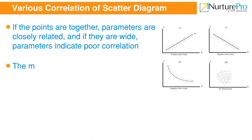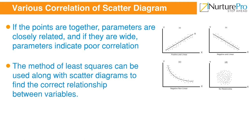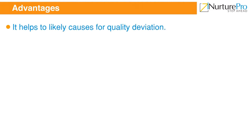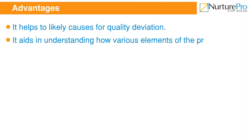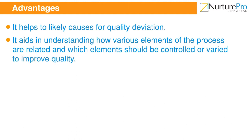The method of least squares can be used along with scatter diagrams to find the correct relationship between variables. The advantages of scatter diagrams are: one, it helps to identify likely causes for quality deviations; two, it aids in understanding how various elements of the process are related and which elements should be controlled or varied to improve quality.